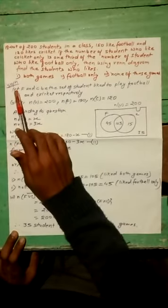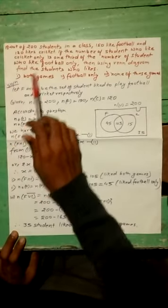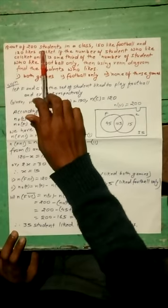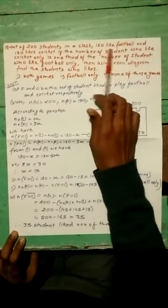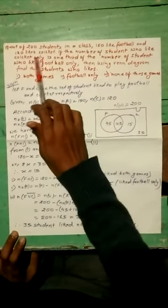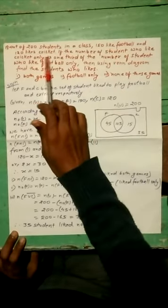The solution here is given. In this question, there are 200 students in a class. 150 like football, 120 like cricket.